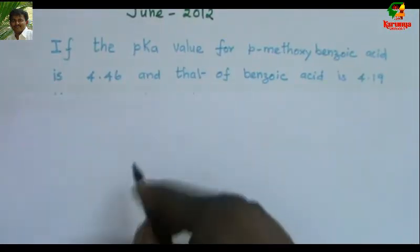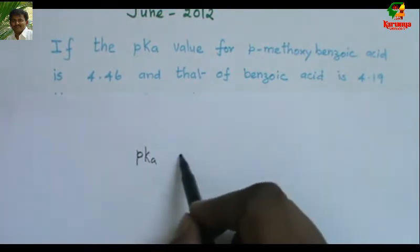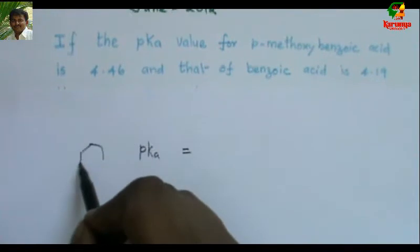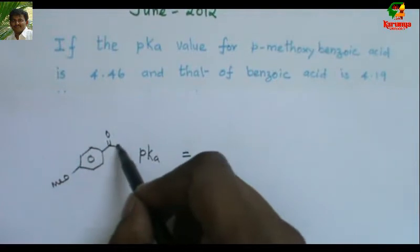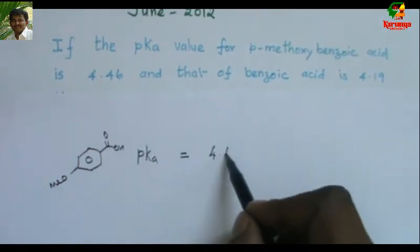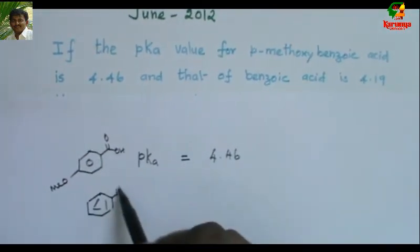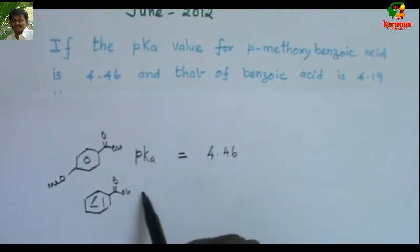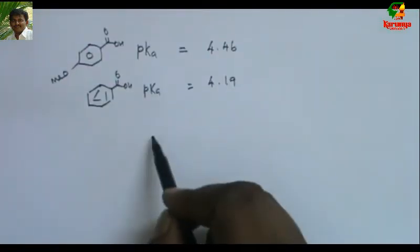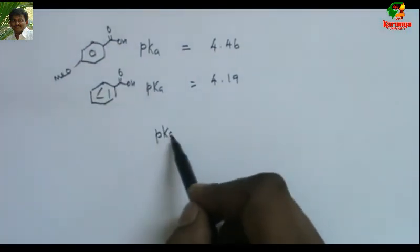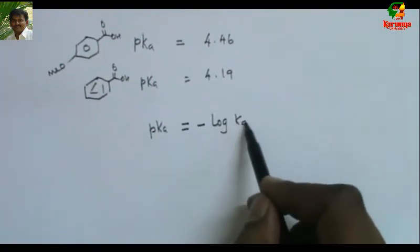The problem gives us the pKa of para-methoxy benzoic acid as 4.46 and that of benzoic acid as 4.19. Recall that pKa can be written as minus log(Ka).